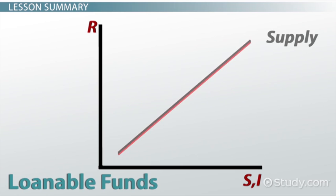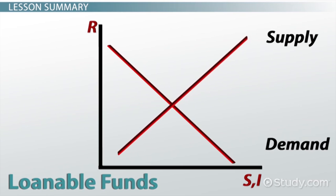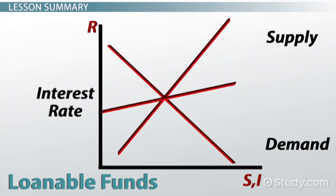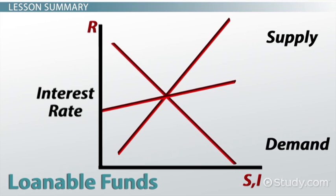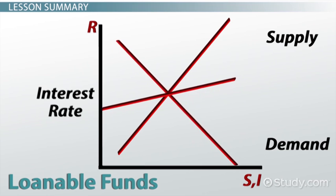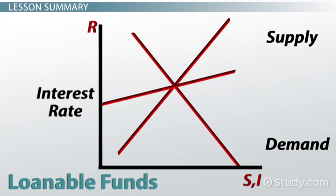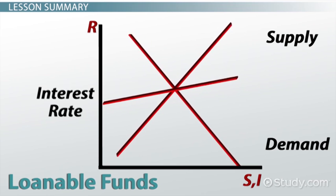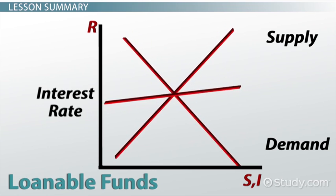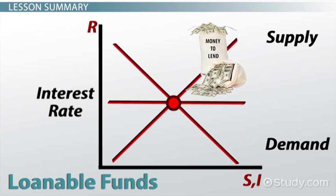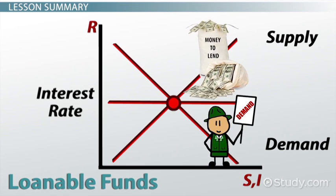The loanable funds market follows the general law of supply and demand, where an increase in supply tends to lower interest rates if demand remains unchanged, and an increase in demand tends to increase interest rates if supply remains unchanged. The market price for interest rates will reach equilibrium and stabilize, where supply of loanable funds equals the demand for them.